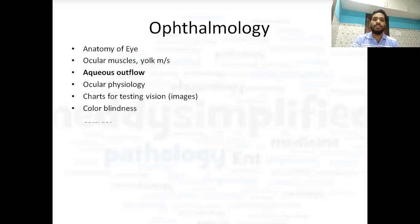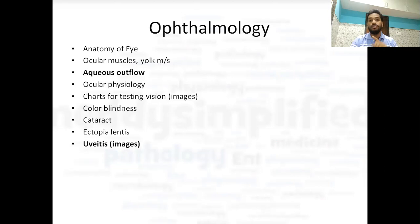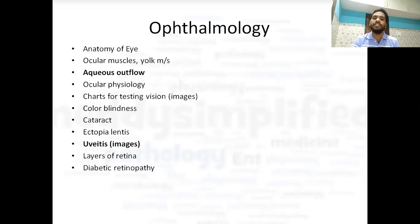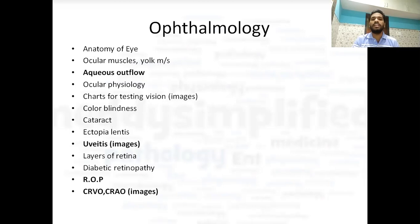Then color blindness — all three types are important. Cataract is a very important topic. Then ectopia lentis and its associated pathology. Then uveitis — three types: anterior, posterior, and pan — and images of uveitis are very important to know. Layers of retina are very important. Then diabetic retinopathy — India is a diabetic capital so you can expect any question from diabetes. Retinopathy of prematurity in premature babies is a very important topic also covered in pediatrics. Then CRVO and CRAO — central retinal vein occlusion and central retinal artery occlusion — images and signs from this topic are frequently asked.